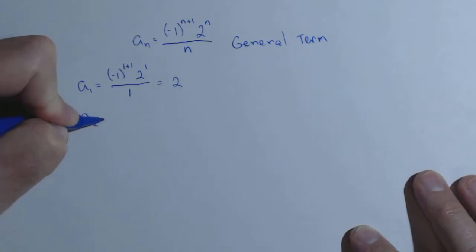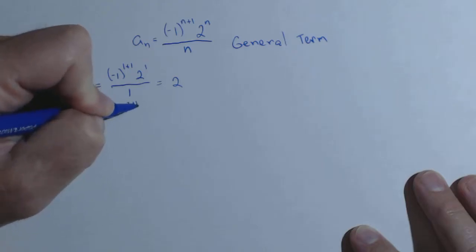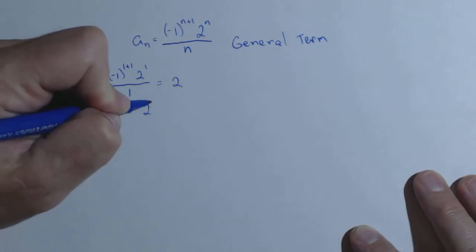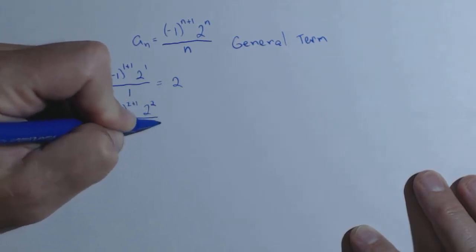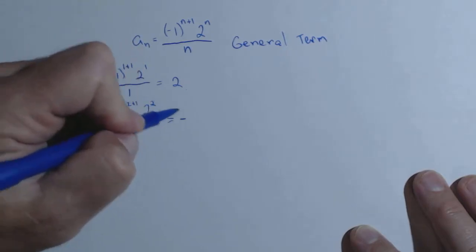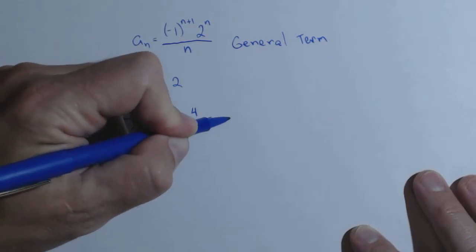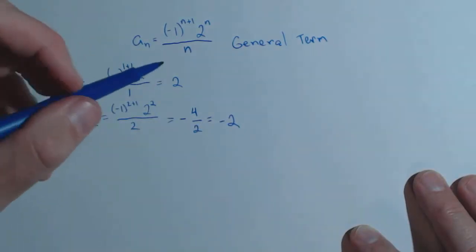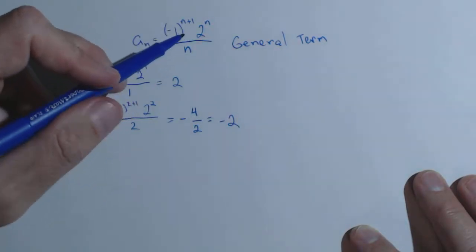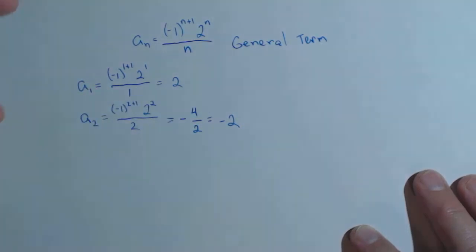Let's just do a couple more. Let's say we want the second term. Negative one to the two plus one, two squared over two. This is now going to be a three here. Negative one to the third power is negative one, so this answer will be negative. We're going to have two squared, which is four over two, or it simplifies down to negative two. This piece here is going to create what we call an alternating sequence because each term the sign is going to flip back and forth.